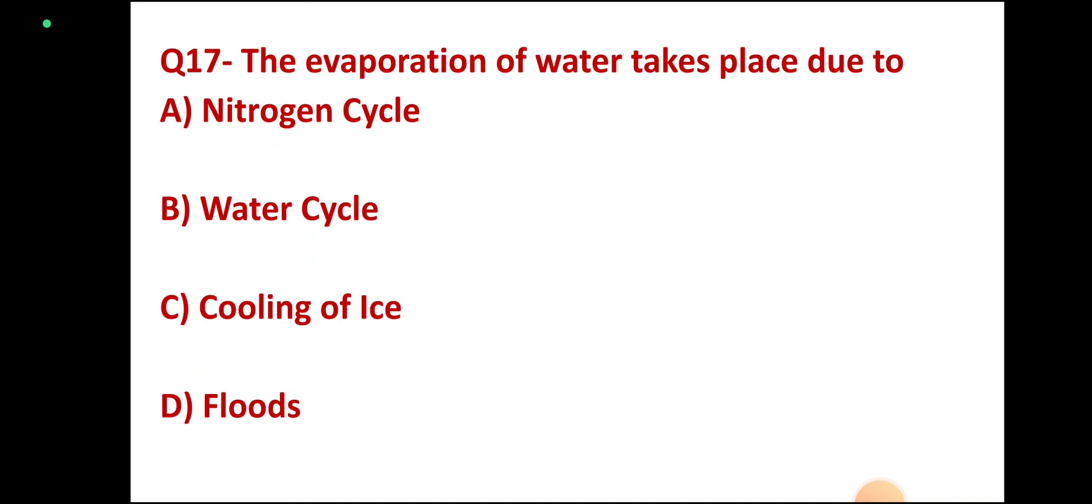Question number 17: The evaporation of water takes place due to nitrogen cycle, water cycle, cooling of ice, or floods. Correct answer: water cycle.